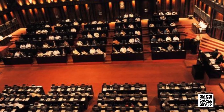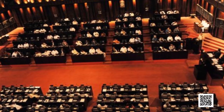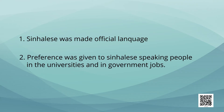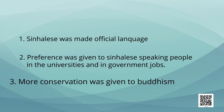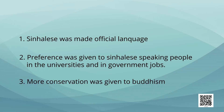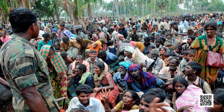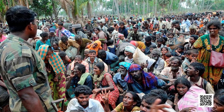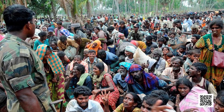In the act, three new things were introduced. Number one, Sinhalese was made the official language. Second, preference was given to the Sinhalese in universities and in government jobs. Thirdly, Buddhism was promoted. On the other hand, nothing was given to the Tamil people. The Tamil people were deprived of their rights and everything was being given to the Sinhalese people.